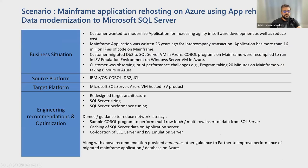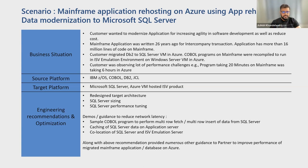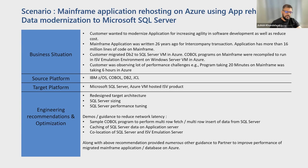Moving on to the next slide — what was the customer scenario? First, they wanted to modernize their application for increasing agility in software development, as well as to reduce cost. This application was written two decades ago for inter-company transactions as well as for insurers to log in — there were close to 16 million lines of code. The customer migrated this DB2 application onto SQL Server on-prem and onto Azure, and COBOL programs were refactored. If you have looked at coding done two to three decades ago, they were not looking for performance optimization — code was written with tens of nested IFs, not following best coding practices, doing singleton calls, etc.